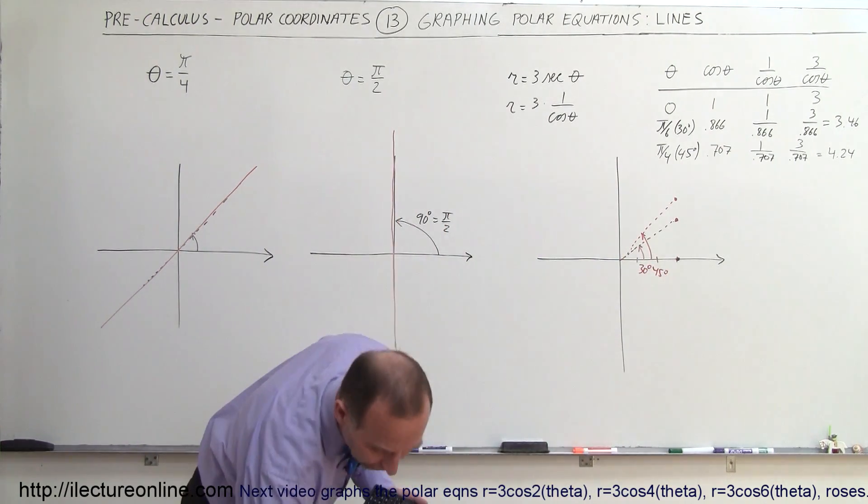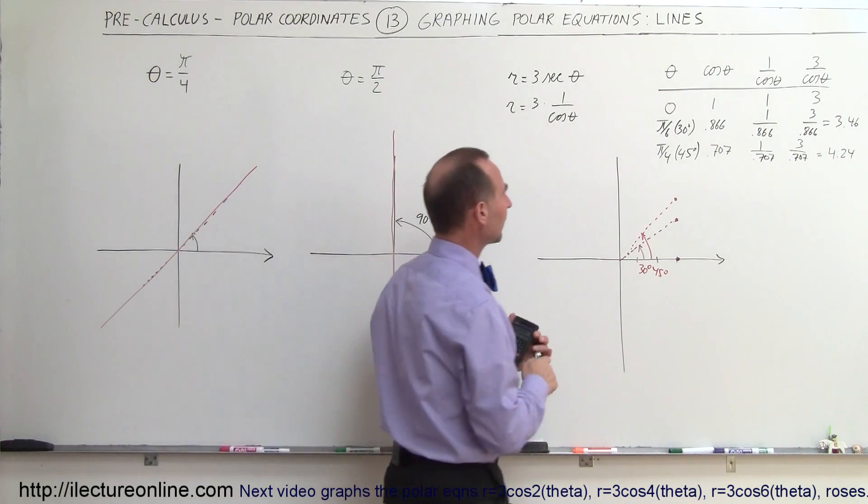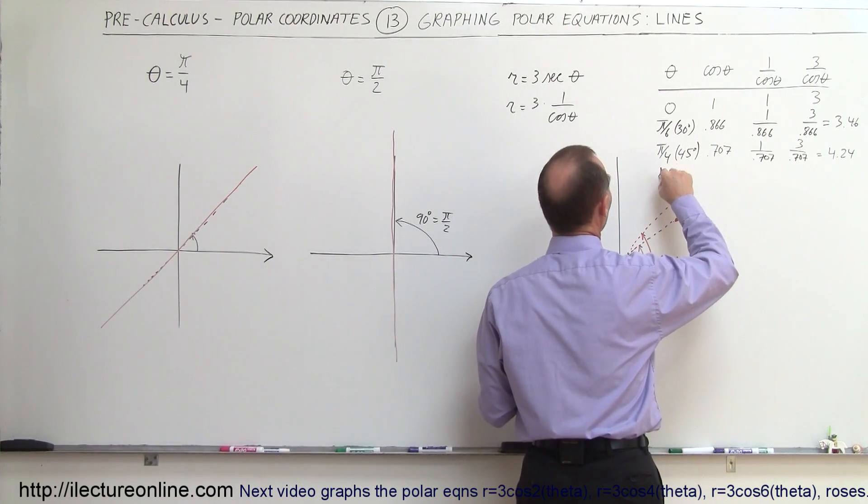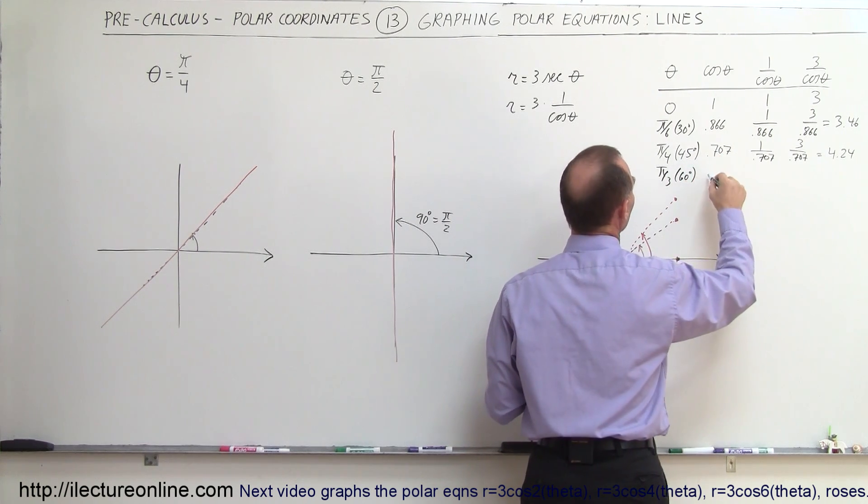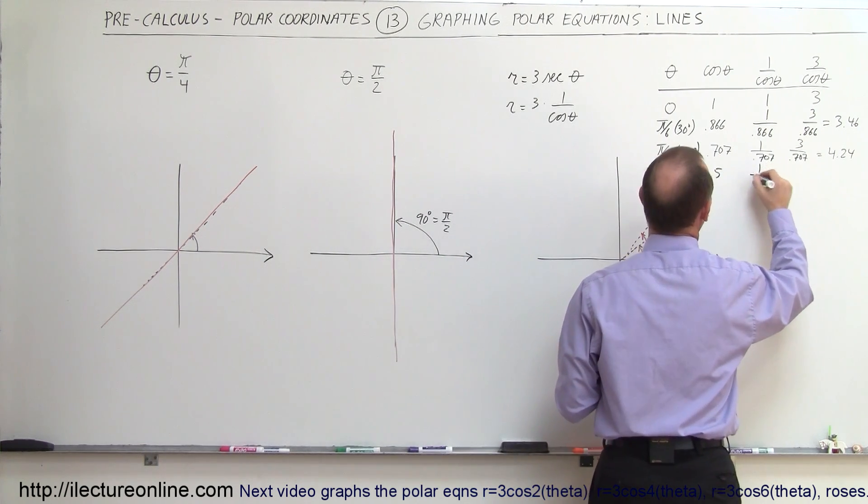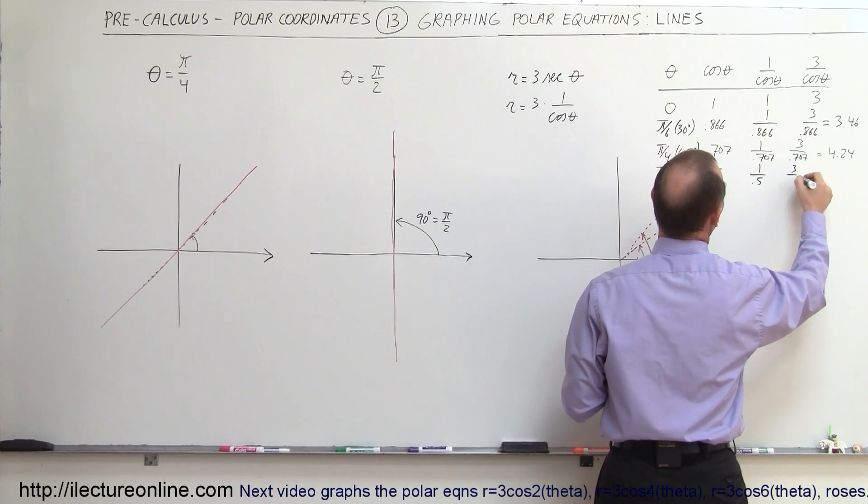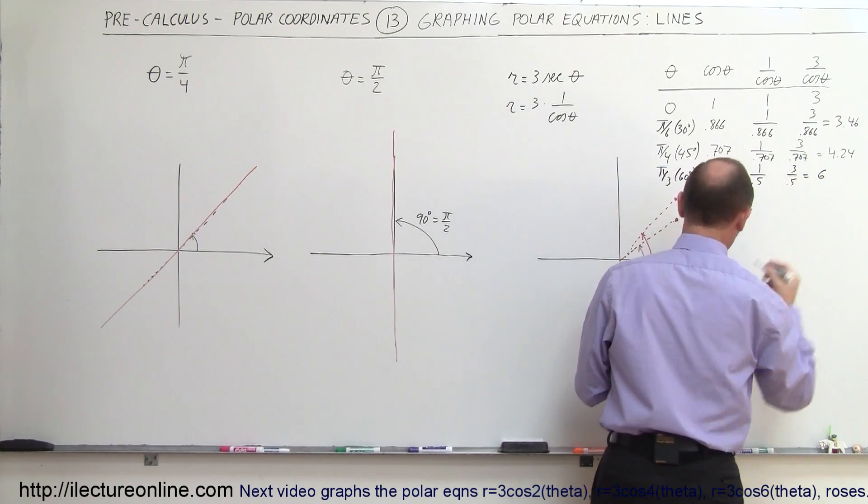Let's try one more point and see what we get. So what if we do pi divided by 3, which is 60 degrees? That would be 0.5. That would be 1 over 0.5, which is 2. And 3 divided by 0.5, which is equal to 6.